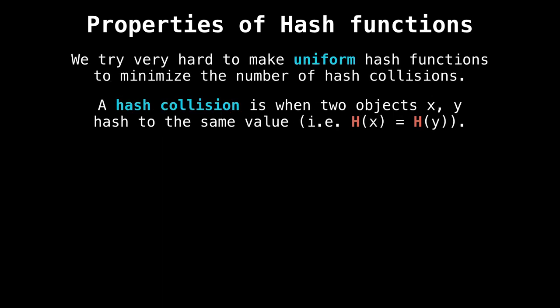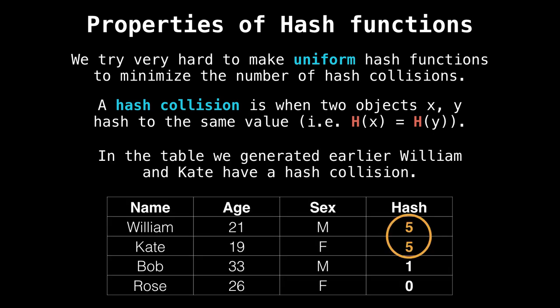Something else about hash functions is we try very hard to make them uniform. To minimize the number of hash collisions, we'll get into why hash collisions are bad shortly. But a hash collision is when two objects x and y hash to the same value, that is h of x equals h of y. And the reason we want it to be uniform is so that all the values of our hash function are hit, so that we can fill the table uniformly. So for example, the table we generated earlier, William and Kate, they have a hash collision. Uh oh.